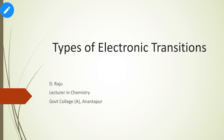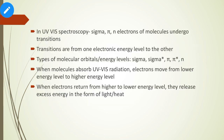Hello viewers. Today we will discuss some important points regarding types of electronic transitions. These types of electronic transitions come under UV-visible spectroscopy. If you are directly watching this video, kindly refer to my previous videos — those are UV-visible spectra related YouTube videos where you can find how electromagnetic radiation interacts with matter, what the different types of molecular energy levels are, and what the selection rules for UV-visible transitions are.